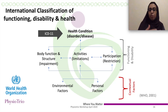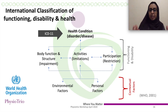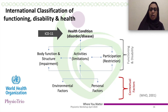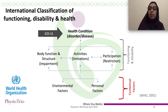This ICF framework gathers all domains relevant to a condition that should be measured. Outcome measurements can be relevant to each domain. For example, measuring pain relates to body function; walking speed relates to activity; health status relates to participation restriction; place of living is an environmental factor; and age, gender, or psychological status are personal factors. Outcome measures tackle all these aspects.